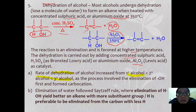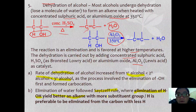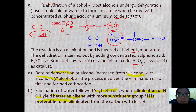The second rule is that elimination of water follows Zaitsev's rule, where elimination of water yields the more stable alkene with more substituent groups. Alternatively, Zaitsev's rule states that hydrogen is preferably eliminated from a carbon with fewer hydrogens.